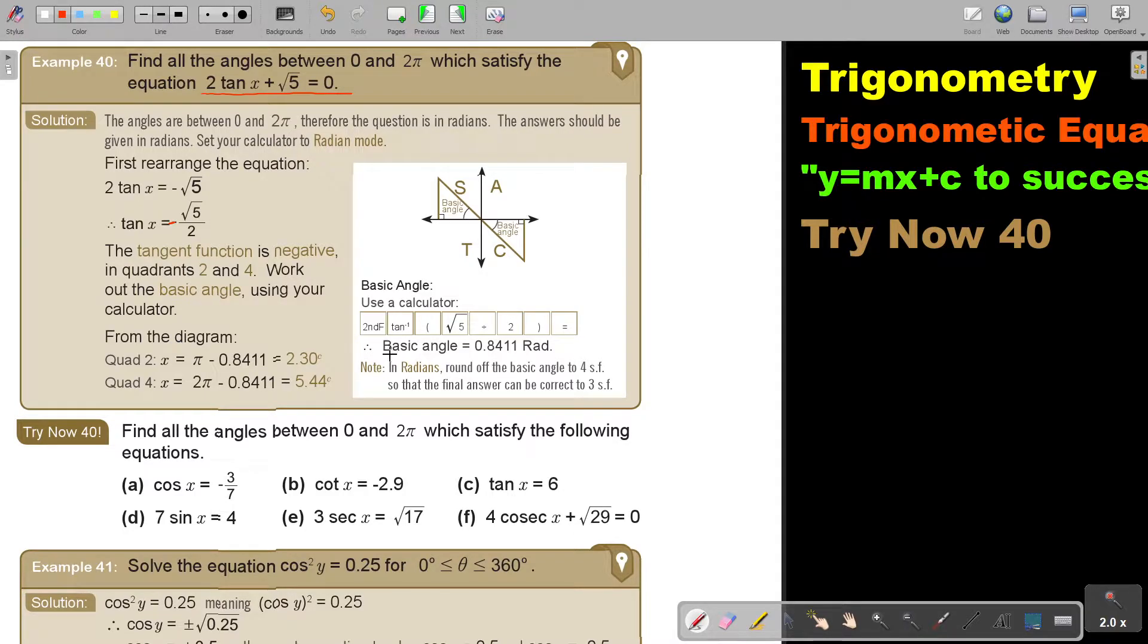Now exactly the same, you find your basic angle. You press shift, tan, bracket, not the negative, square root 5 divide 2, close the bracket, equals. And now, because the answer must be to 3 significant figures, you must make your basic angle to 4 significant figures in radians. The answers must also always be 3 significant figures, so make your basic angle to 4, one more significant figure. And then don't forget, this is π, so this is π minus that angle, and this is 2π minus that basic angle. And that's what I did. You can either write rad for radians or make the little c.